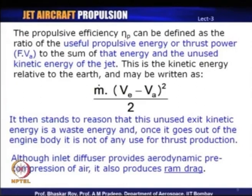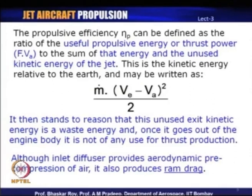The inlet diffuser provides aerodynamic pre-compression and also produces ram drag. So the diffuser has both utility — producing a certain amount of compression — and a negative aspect, the ram drag. Similarly, the jet exhaust produces a reaction thrust but also unused kinetic energy. The intake produces pre-compression of the air but also ram drag, which is a negative component as far as thrust is concerned.